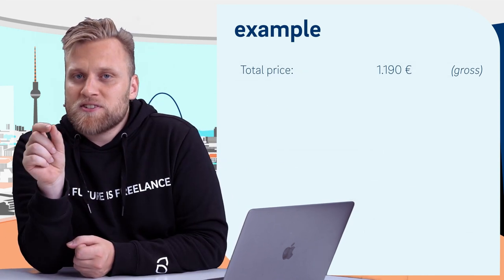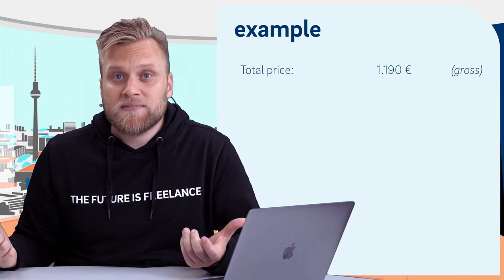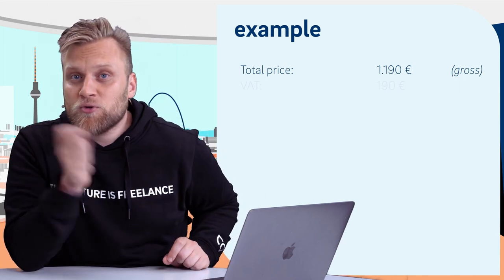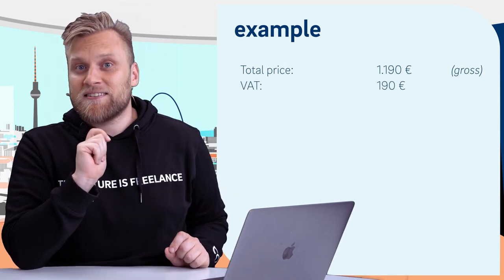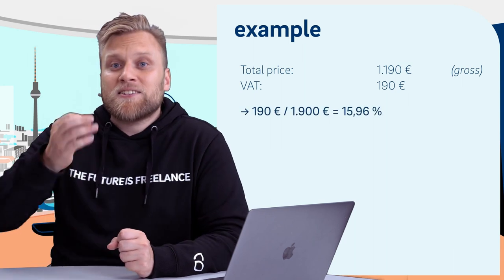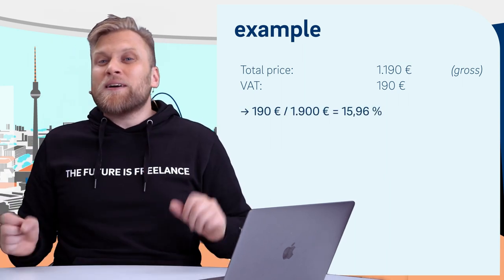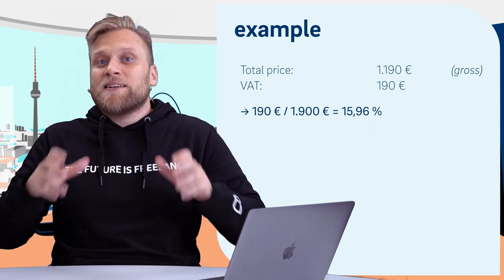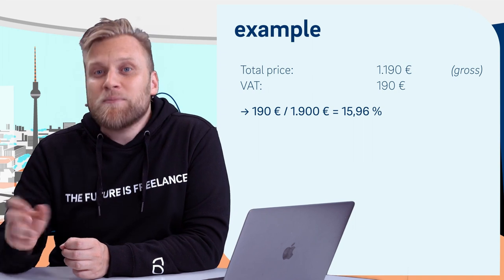If we want to calculate the VAT rate from the gross price, it's not 19% — because we're dividing by the gross amount. For example, 190 divided by 1190 is approximately 15.9%. So with the full 19% tax rate, VAT represents approximately 15.9% of the gross price. This is why it's incorrect when MediaMarkt claims to give you VAT as a gift by reducing the price by 19% — the correct reduction from a gross amount would be 15.9%.